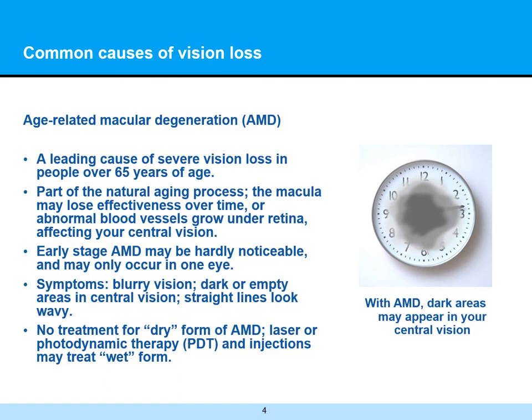There's a tool called an Amsler grid, which is available on our website, that you can use as a self-screening tool to see if perhaps you may have some of these changes. At this time, there's no good treatment for the dry form of age-related macular degeneration. Lasers, photodynamic therapy, and injections may treat the wet form, or the neovascular form, of AMD.